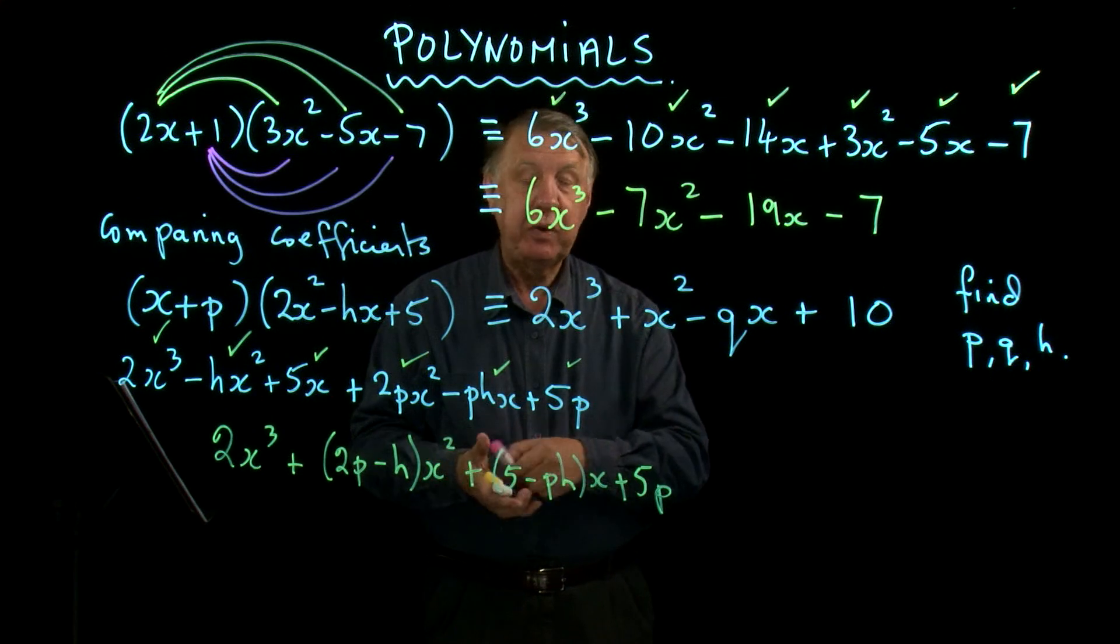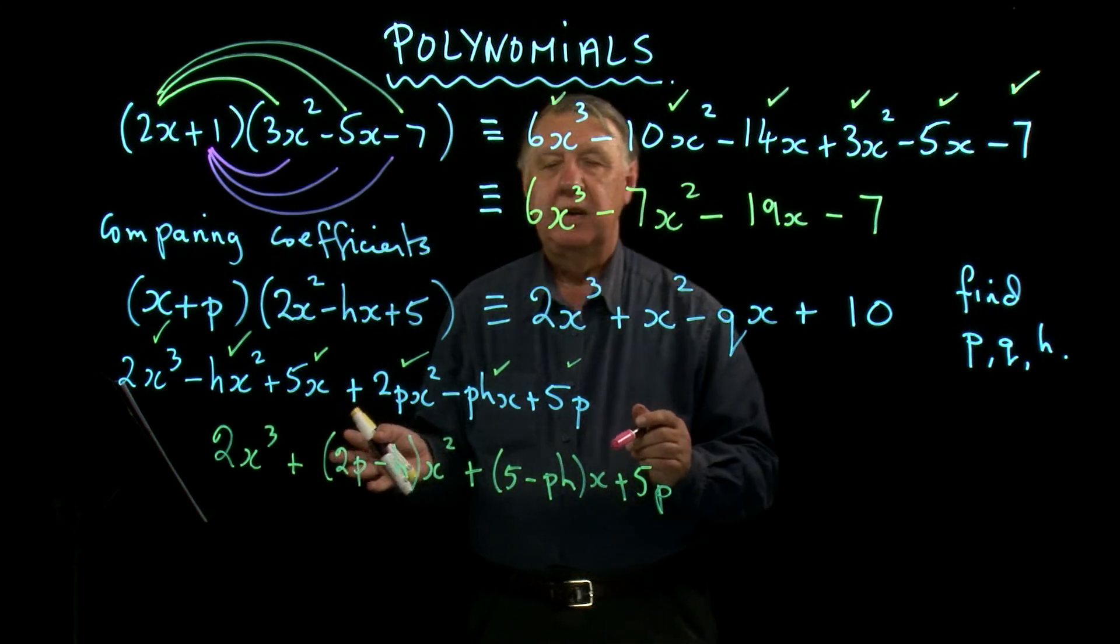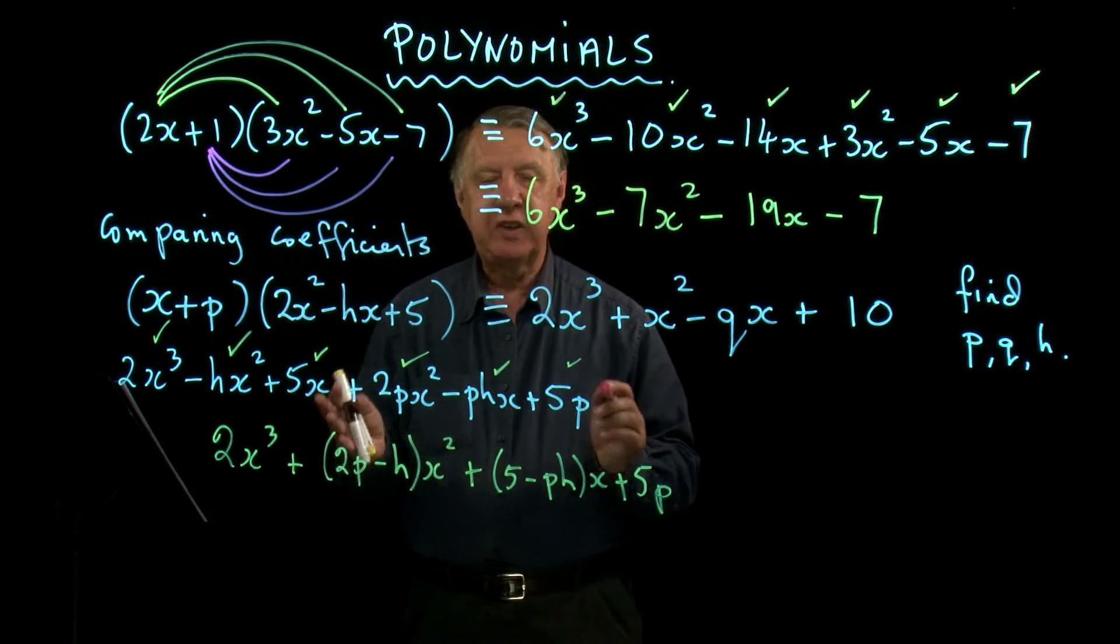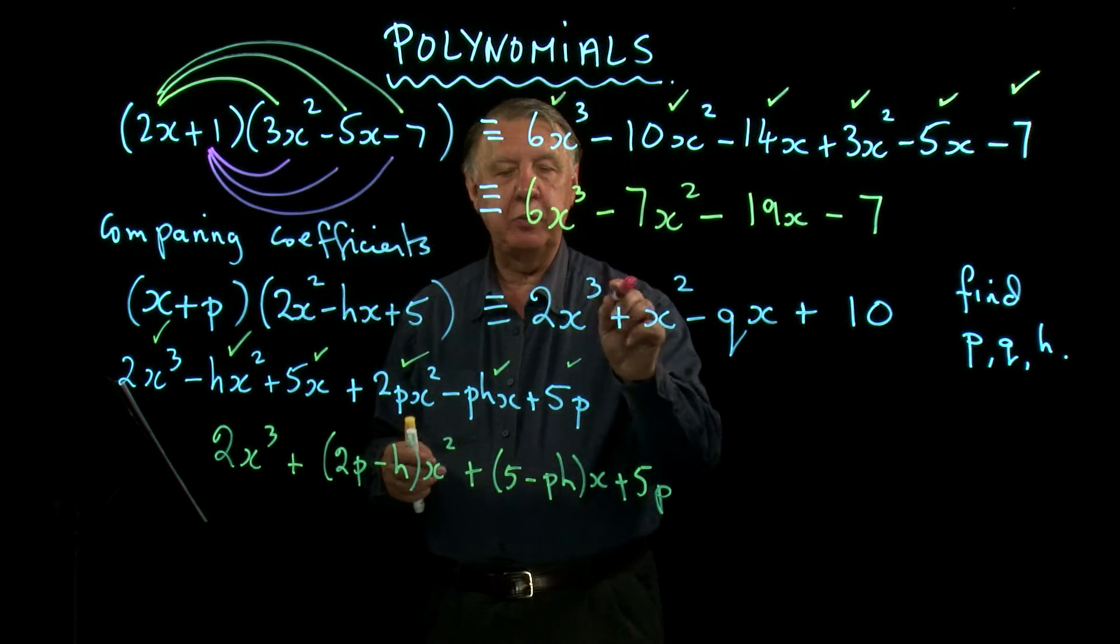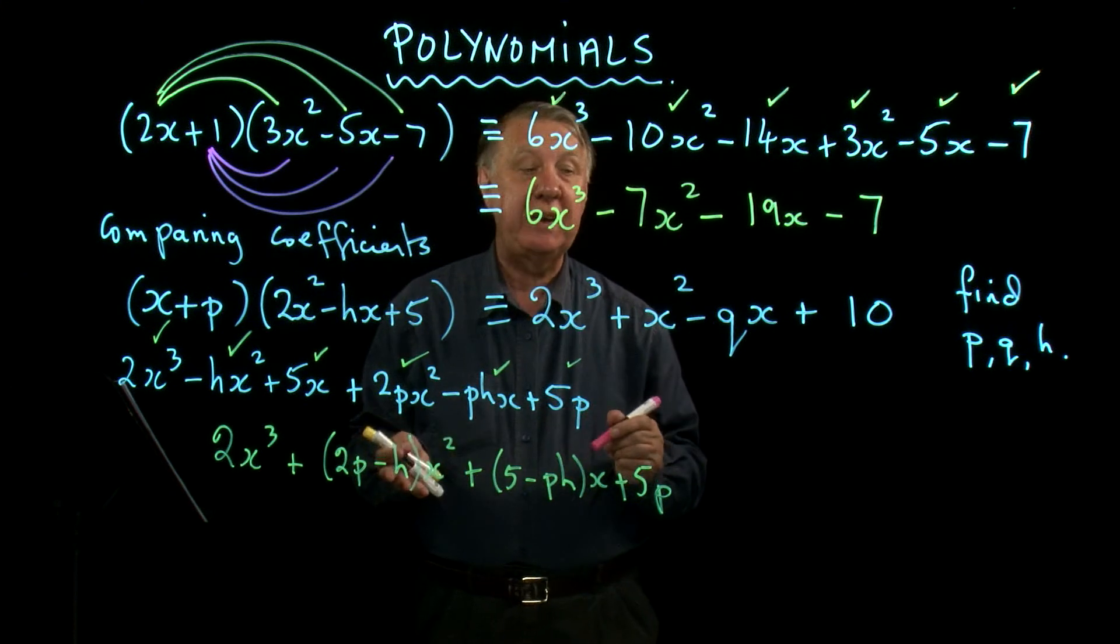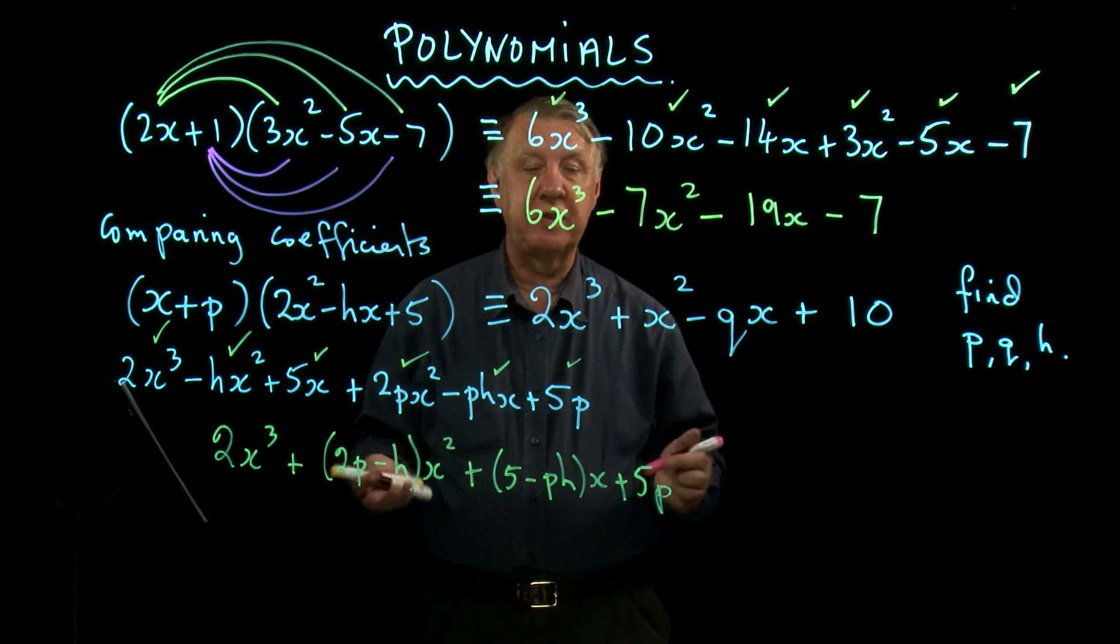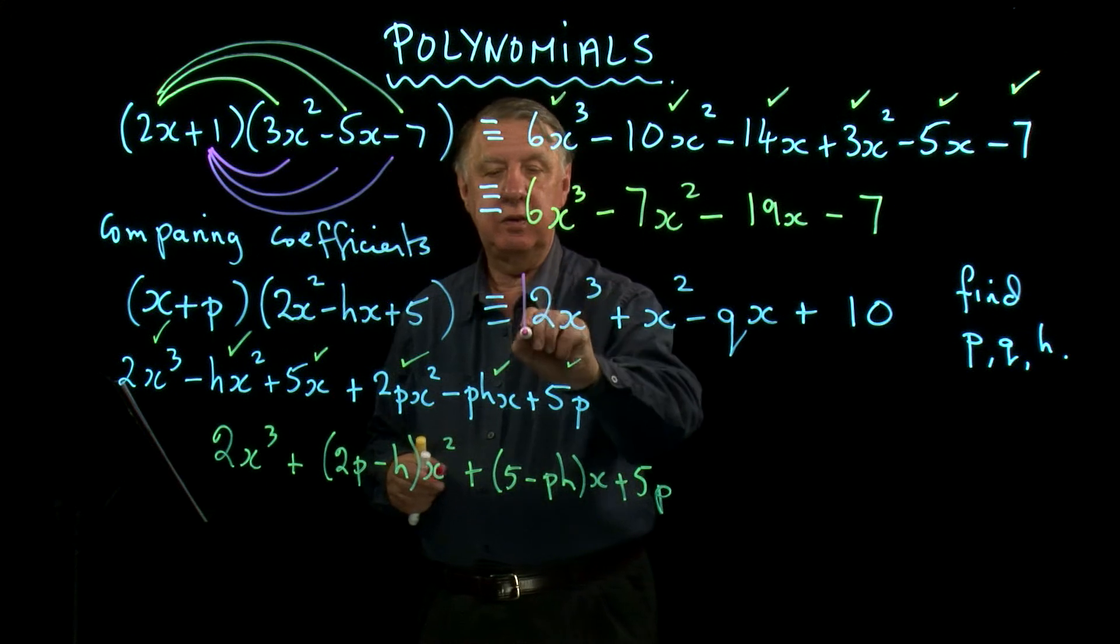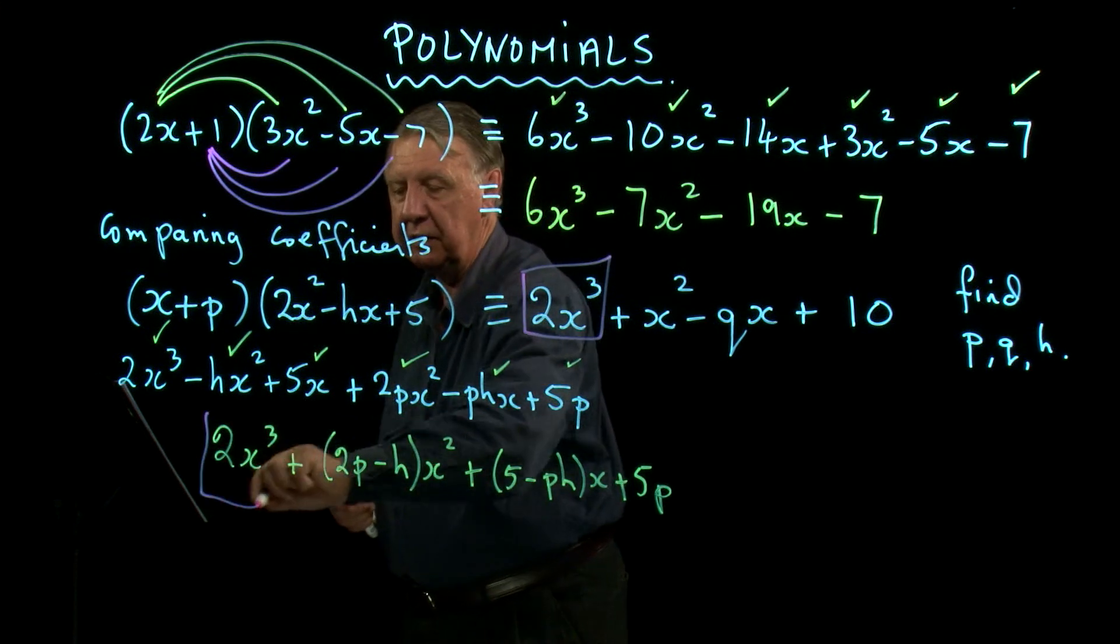And all of this is the same, not equal, the same as that. So what does the same mean? Well, the same strictly means that whatever value of x I put into each side, I'll get the same answer. But it also means it's got to look the same. 2x³, 2x³, so that's okay.